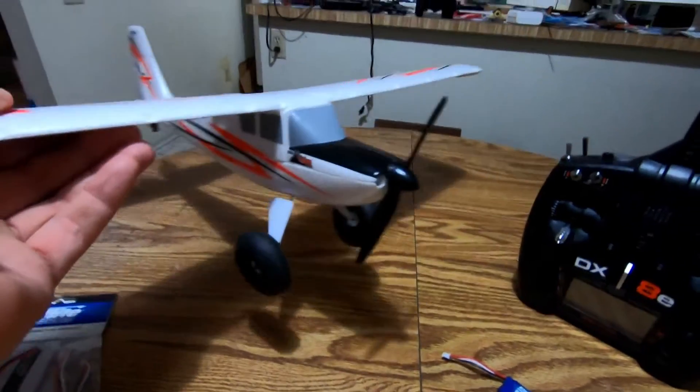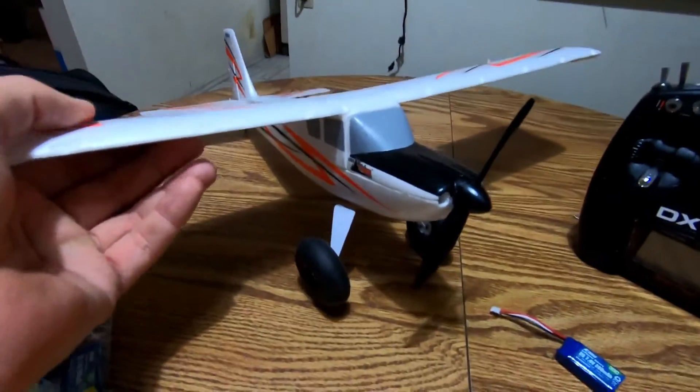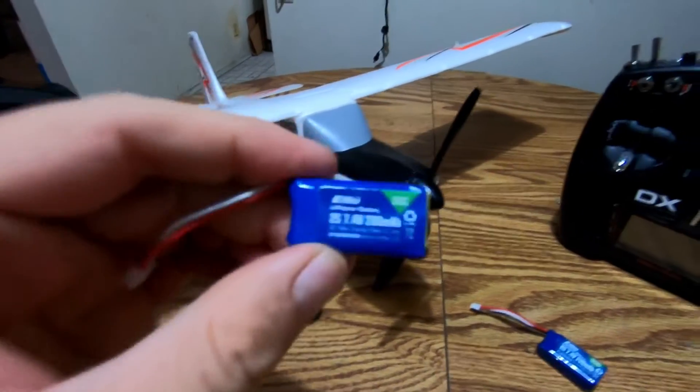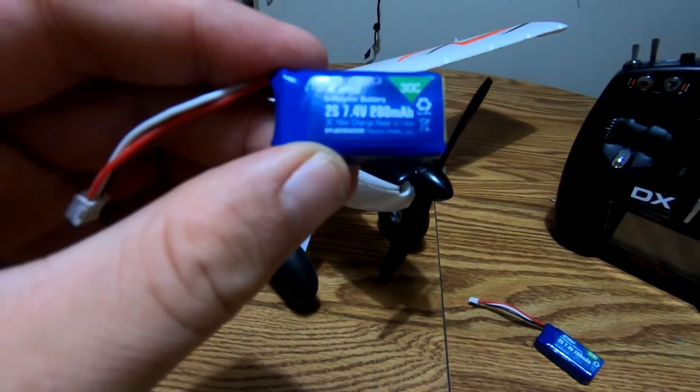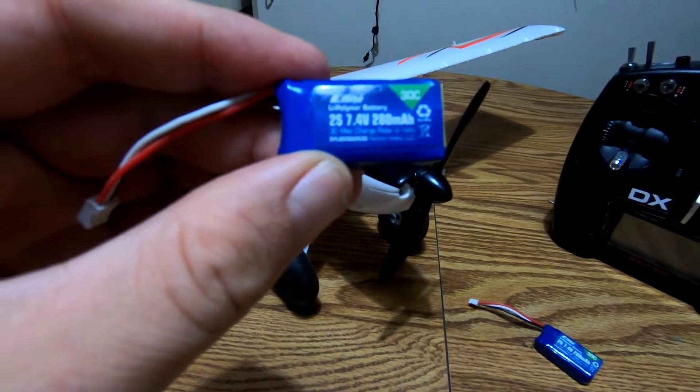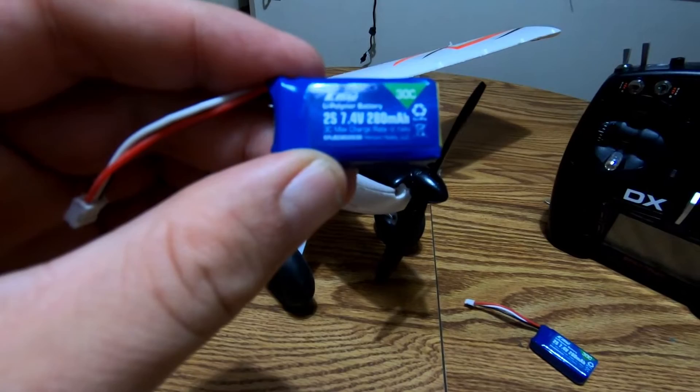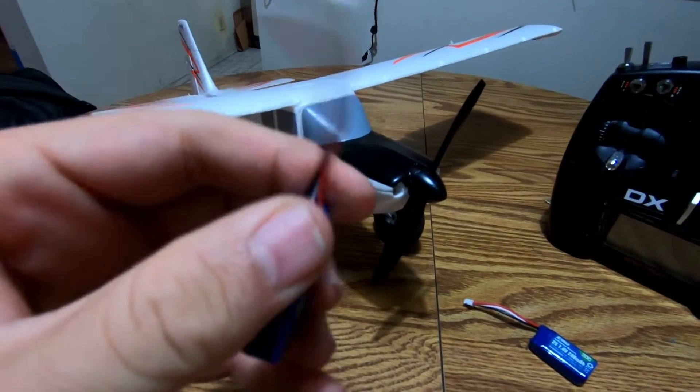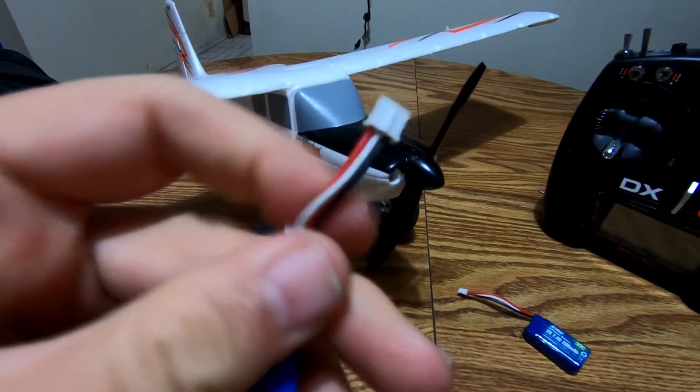If you're like me and you enjoy flying these little Horizon Hobby UMAX planes, they use a little battery. This is the E-Flight Lithium Polymer Battery 30C, 2 cell, 7.4 volt, 280 milliamps, and the only connector on this battery is this little guy.